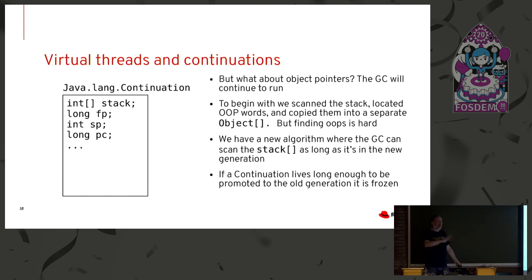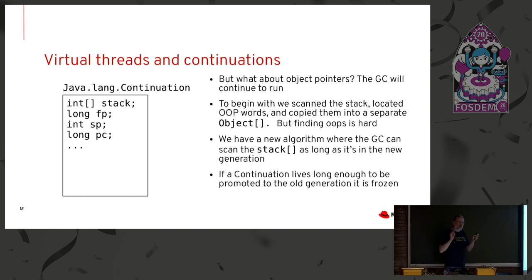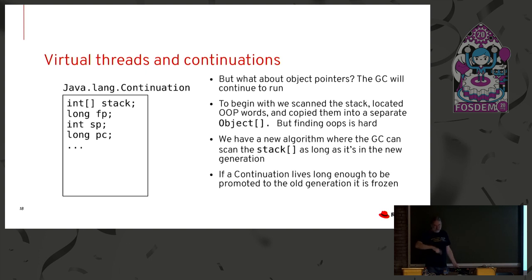A continuation is basically just the running context of a Java program. A virtual thread is composed of its continuation plus a bit more stuff. When we save the stack, we copy it into a Java array — just an array of ints. But the garbage collector is going to want to run and move objects around, which is going to invalidate some of the pointers in that int array — the copy of the stack. What we used to do was scan the whole stack, find all the words in the stack that were object pointers — or oops — and copy those into a separate object array exposed to the garbage collector. Then when we remounted the virtual thread, it would copy them all back. The problem is that finding which words are object pointers and which are just integers is really quite an expensive operation — you have to trawl through the metadata of all the methods on the stack.